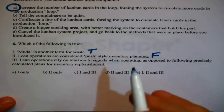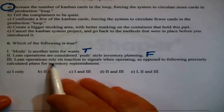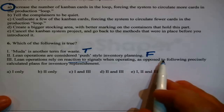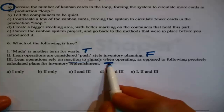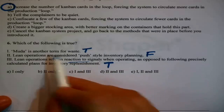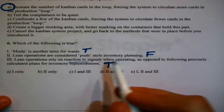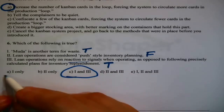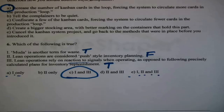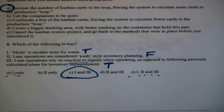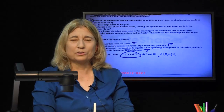Muda is another term for waste — true, that's keyword-level knowledge. Lean operations are considered push-style inventory planning — that is false; Lean is pull. Lean operations rely on reaction to signals when operating, as opposed to following precisely calculated plans for inventory management — if that's true, that's basically another definition for a pull system. So statements one and three test true, and that's one and three. With that, we are done with these questions.